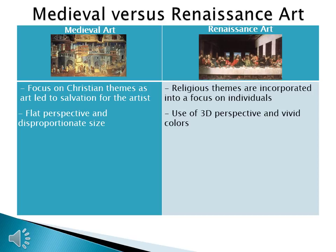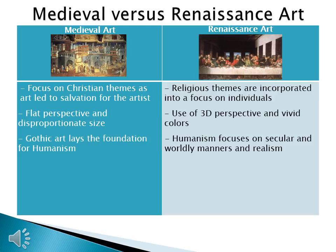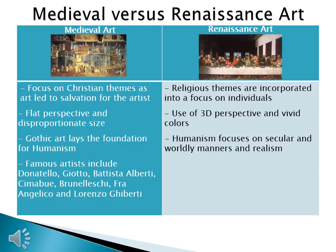Medieval art, also called Gothic art, lays the foundation for humanism, which we find in Renaissance art. Humanism focuses on secular and worldly matters and realism — we're not focusing on the religious, we're focusing on the human. There are many famous artists in medieval art, including Donatello, Giotto, Battista, Alberti, and Brunelleschi. For Renaissance art, you only need to know two: the famous artists are da Vinci and Michelangelo.